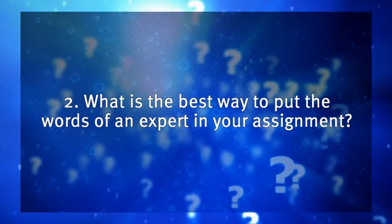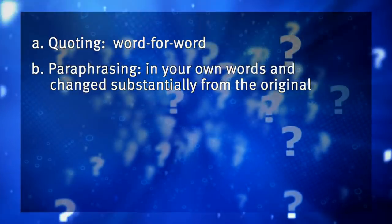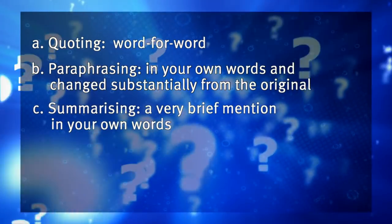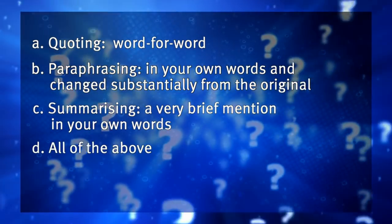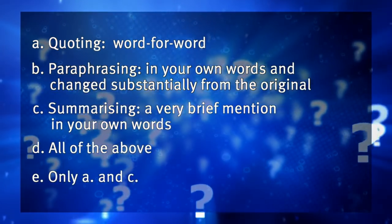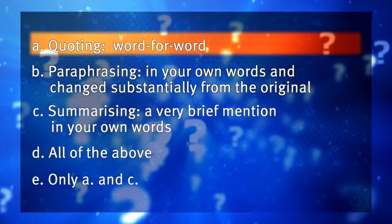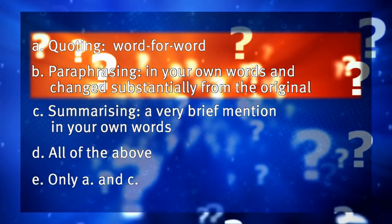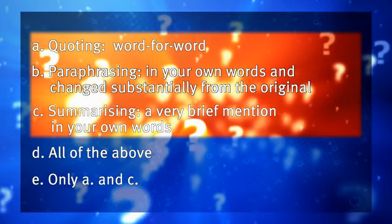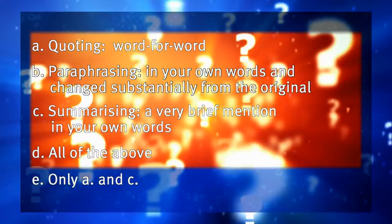Next, question two. What is the best way to put the words of an expert in your assignment? A — quoting, word for word. B — paraphrasing, in your own words and changed substantially from the original. C — summarising, a very brief mention in your own words. D — all of the above. E — only A and C. Quoting is great for particular phrases that you feel are perfectly expressed. But paraphrasing is a good way to show that you've understood the ideas of experts. Summarising is also appropriate if you only want to mention the expert briefly. So in fact, any of these are correct as long as you cite the original author.